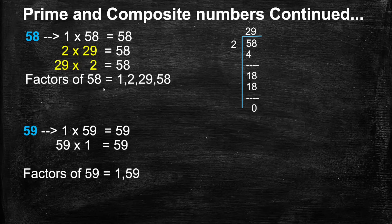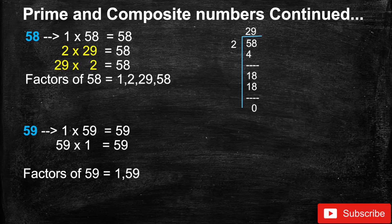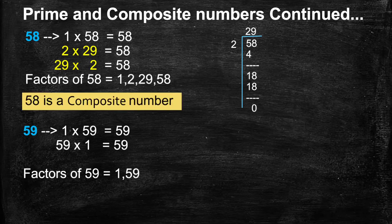Factors of 58: 1, 2, 29, and 58. Since 58 has more than 2 factors, 58 is a composite number.